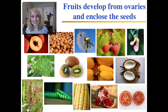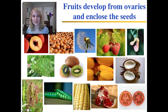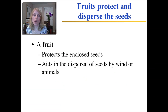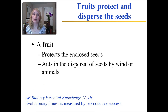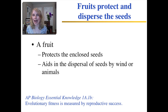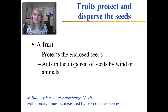Fruits like dandelion fruits disperse seeds by wind. Others, like raspberries, are dispersed by animals. It takes a lot of energy for the plant to produce sugary flesh like a raspberry or an apple, but it's worth it because it attracts an animal to eat the fruit — then the animal walks away and deposits the seeds elsewhere, so the seeds get dispersed.